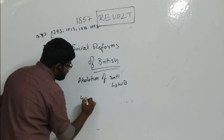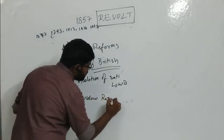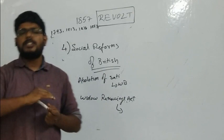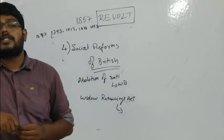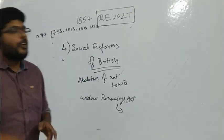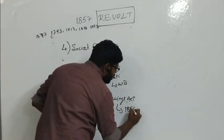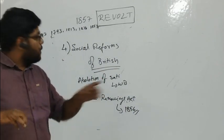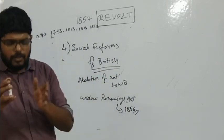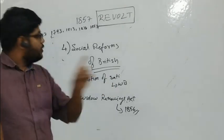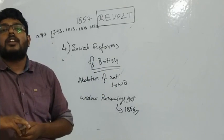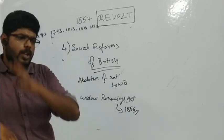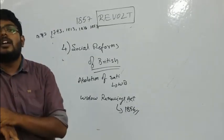Regarding the Widow Remarriage Act, some books say it was given by Lord Dalhousie and some say by Lord Canning, because in 1856 Lord Dalhousie was transferred and Lord Canning came in his place. For examination purposes, most books attribute the Widow Remarriage Act to Lord Dalhousie.